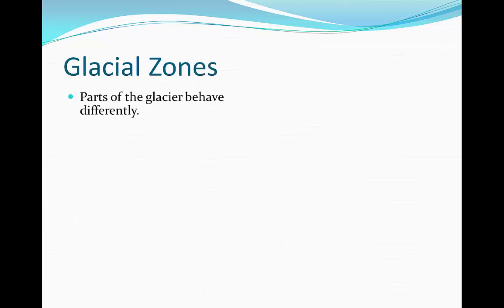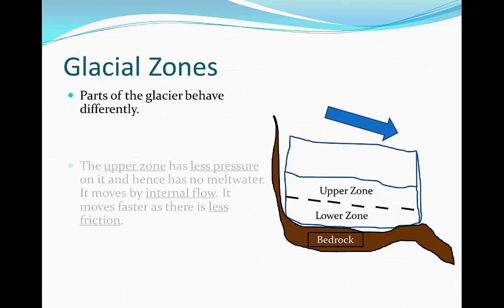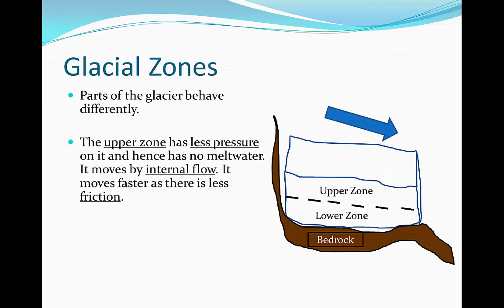Glacial zones: parts of the glacier behave differently. Here we have two zones in the glacier — the lower zone and the upper zone. The upper zone has less pressure on it and hence has no melt water. It moves by internal flow, which can also be described as internal deformation.